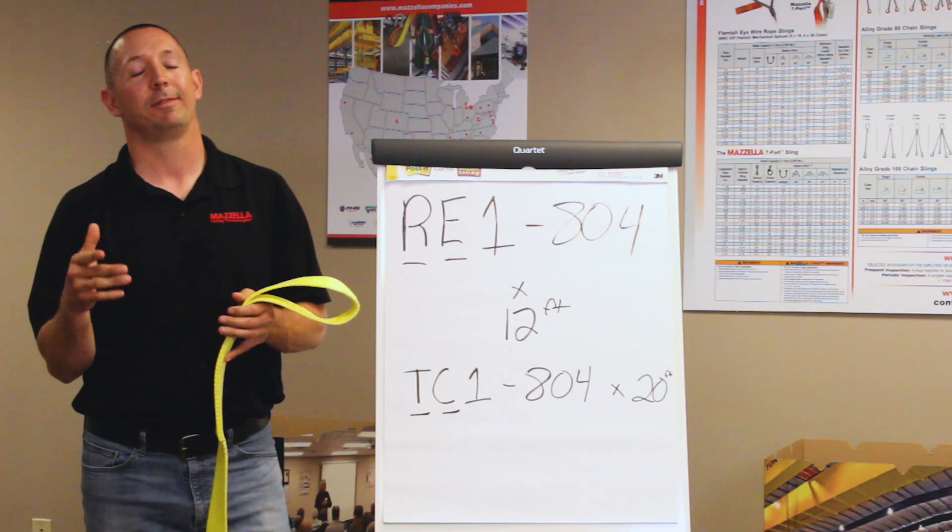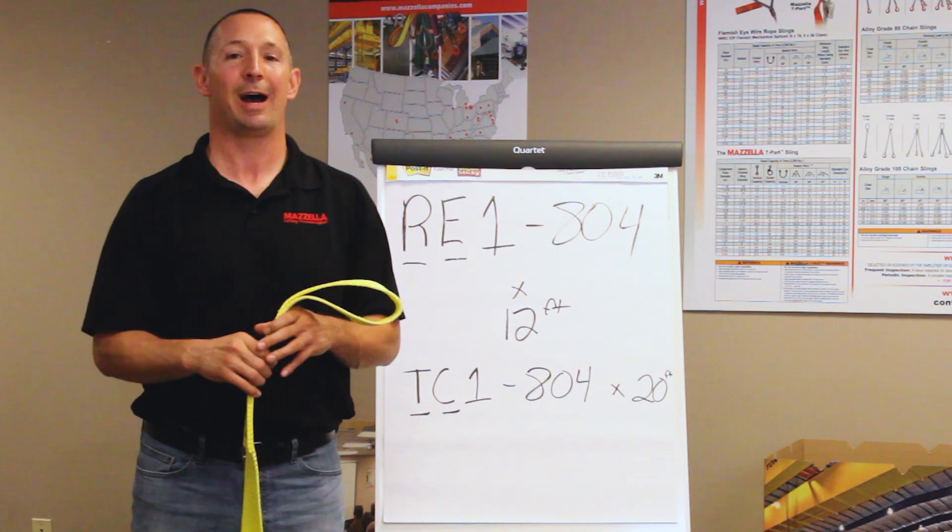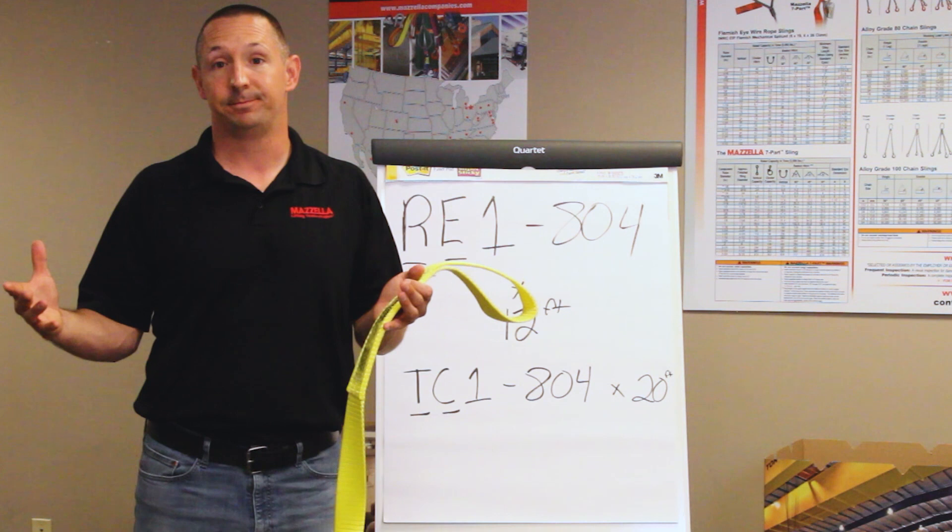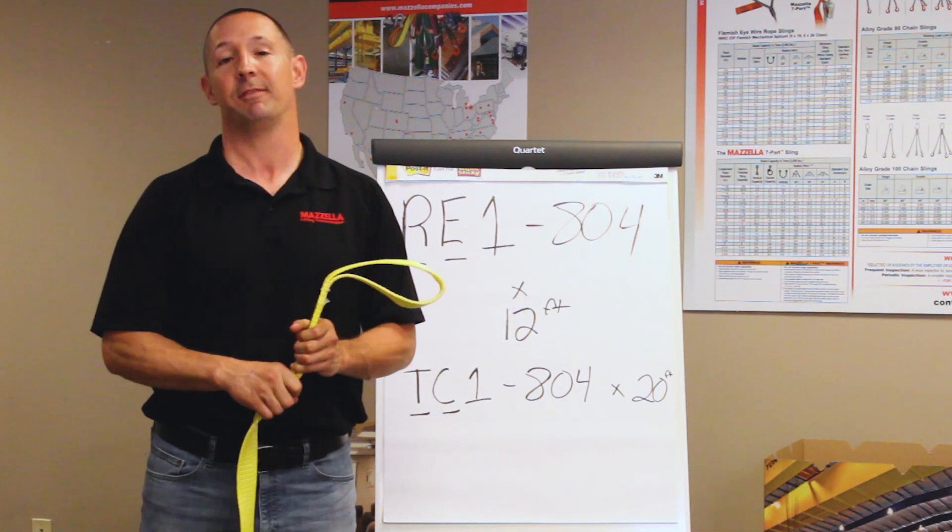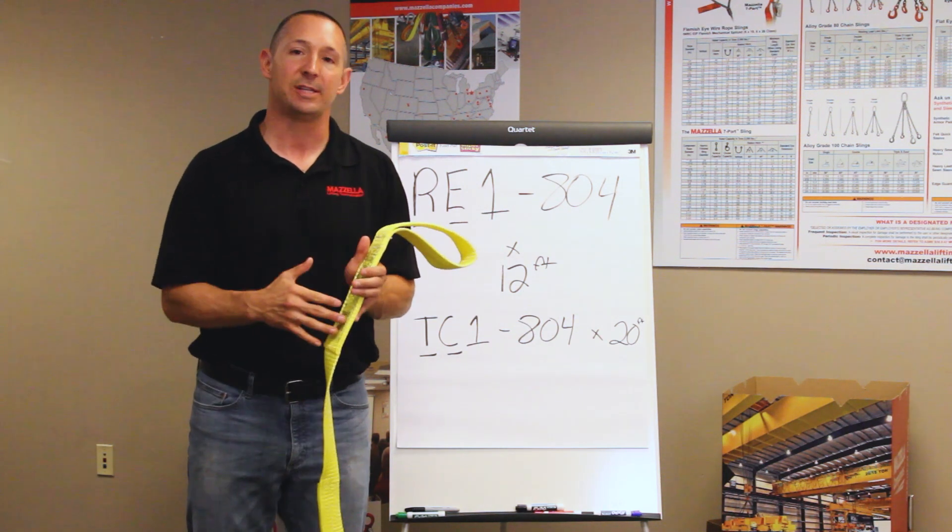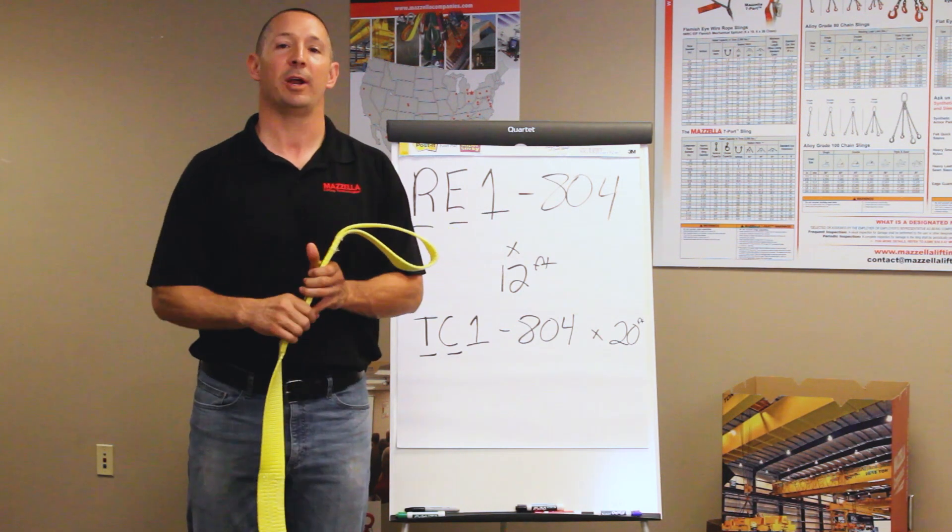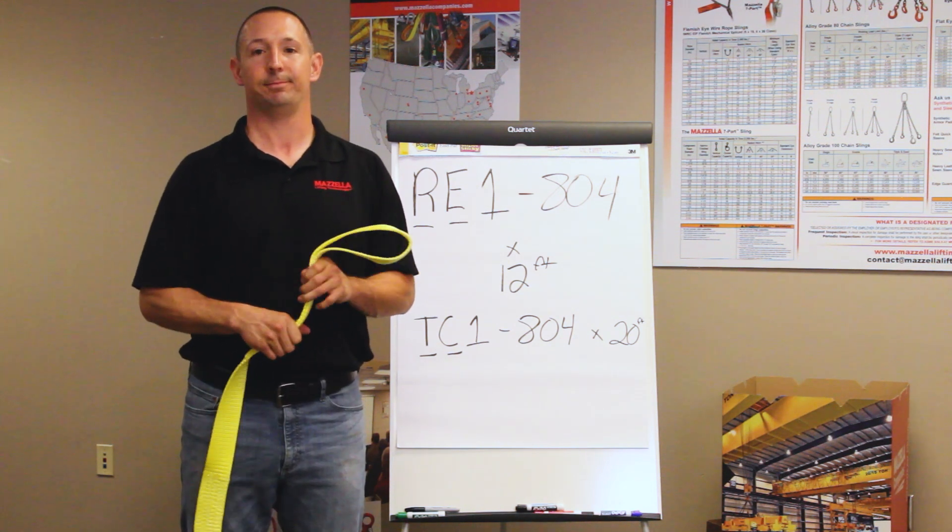In conclusion, flat web slings can be great, strong slings to help you get your job done, but they're not made out of steel. We've got to protect our slings from tears, cuts, holes, nicks, anything of that nature. Now, if you have a question about any of the verbiage you might see on your sling, or something coming up with a lifting application that you have, please don't hesitate to give us a call. We'll walk you through it.